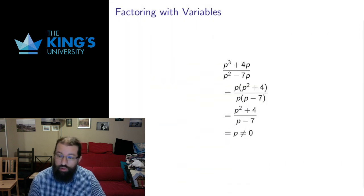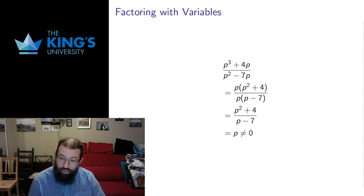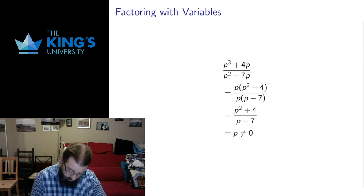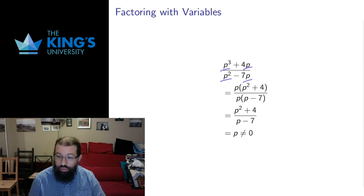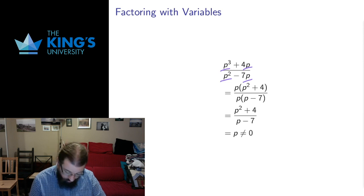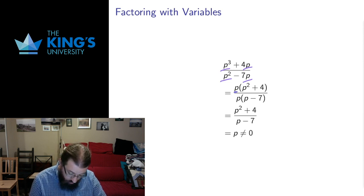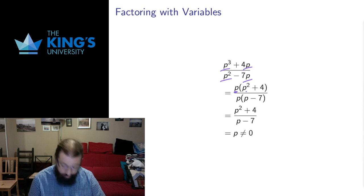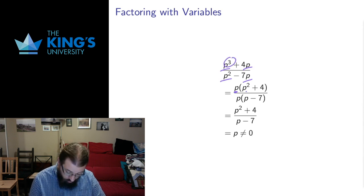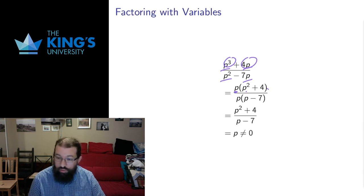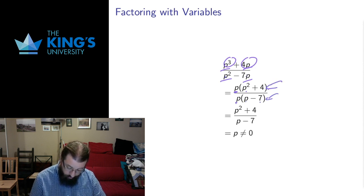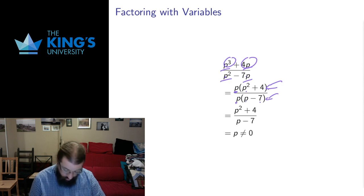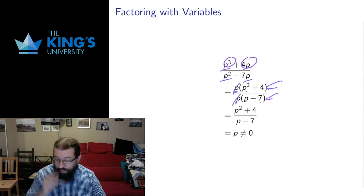Here's another example. This example involves simplifying a complicated fraction. Here the variable is p. p is a common factor of both of those terms. p is also a common factor of both of those terms. So I can factor the numerator and factor the denominator. So if I pull the factor p out here, p times p squared, when I multiply bases, I add exponents, so that would give me p cubed. p times 4 will give me 4p, so that will recover the numerator. And the denominator, p times p is p squared, p times negative 7 is negative 7p, so that will recover the original denominator.